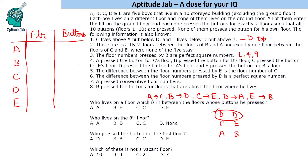It is given that B presses buttons for floors that are above the floor where he lives. So B can live on floors 1, 4, or 9 and press perfect square buttons. But B cannot press 1, because he must press floors above where he lives. Therefore, B presses buttons 4 and 9.